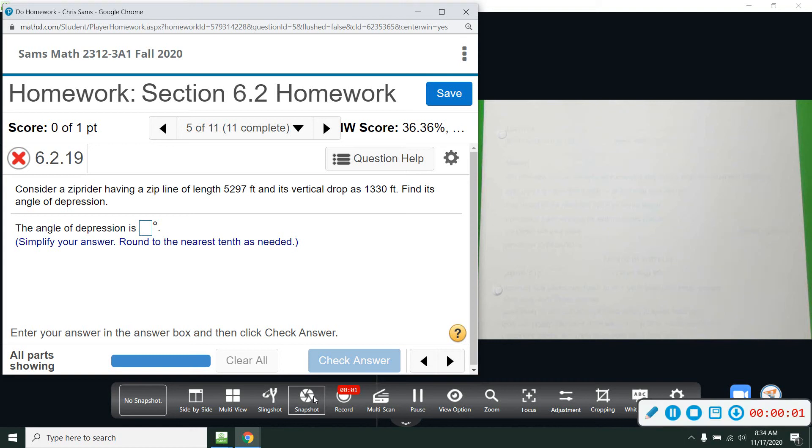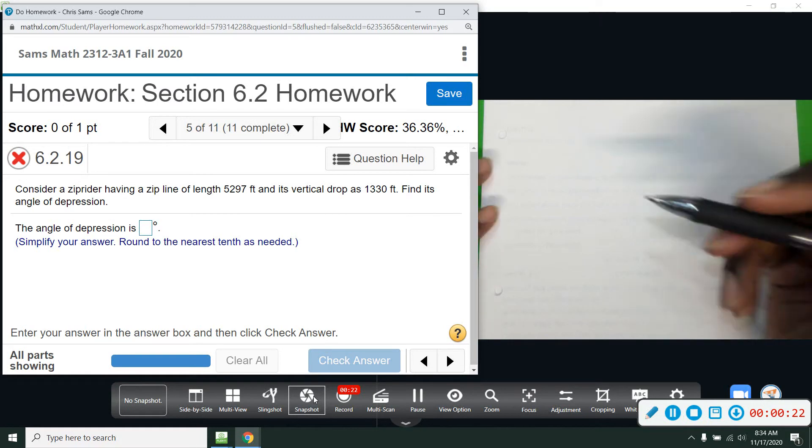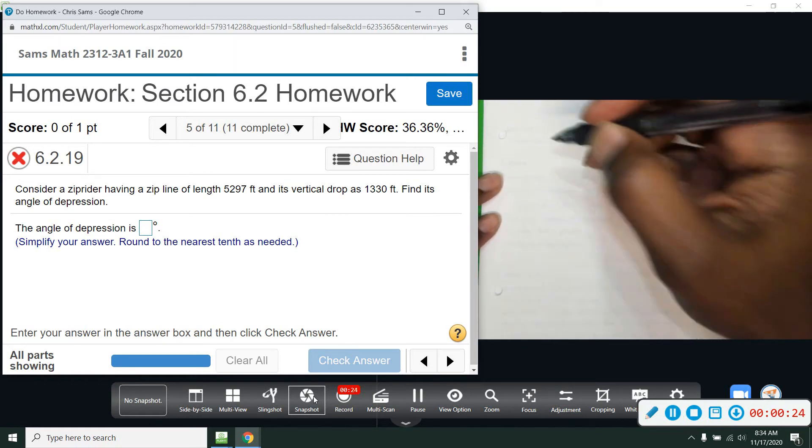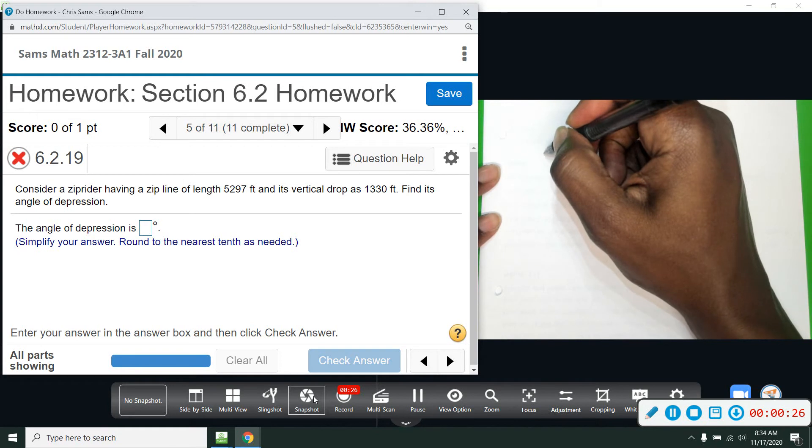Alright, number five. Consider a zipper having a zip line of length 5297 feet and a vertical drop of 1330 feet. Find its angle of depression.